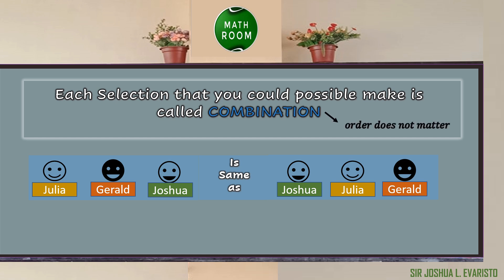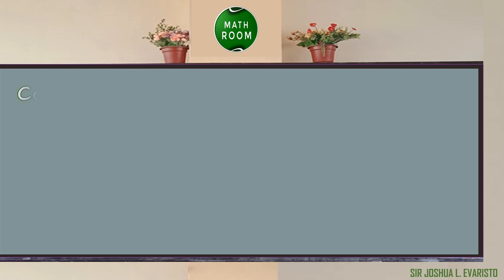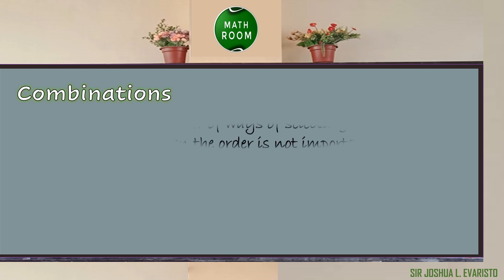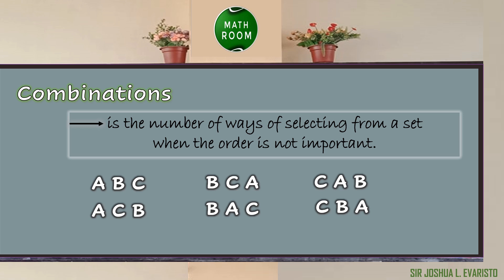Because in combination, order does not matter. On the other hand, if you choose Julia, Joshua, and Moira, that is another combination. By definition, combination is the number of ways of selecting from a set when the order is not important. In combination, ABC, BCA, CAB, ACB, BAC, and CBA are just the same — that is just one combination.